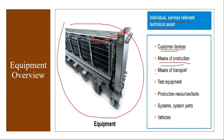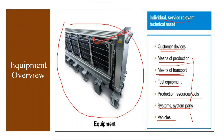Equipment can be a means of transport - trucks, lorries, those kinds of things. Even test equipment used in the quality laboratory, production resource tools (PRTs), system parts, vehicles like cars and vans - all are considered equipment. But from a Customer Service (CS) perspective, it is a customer product that we manufacture and sell to the customer.